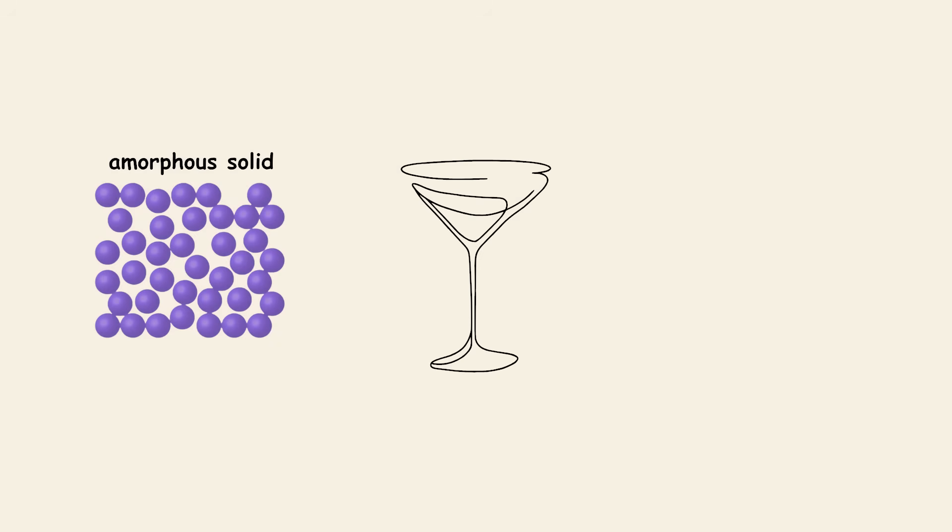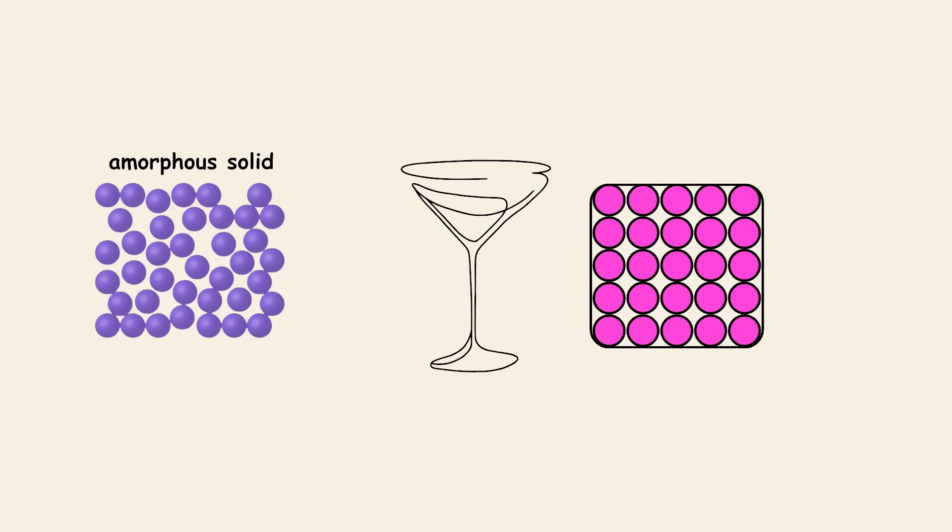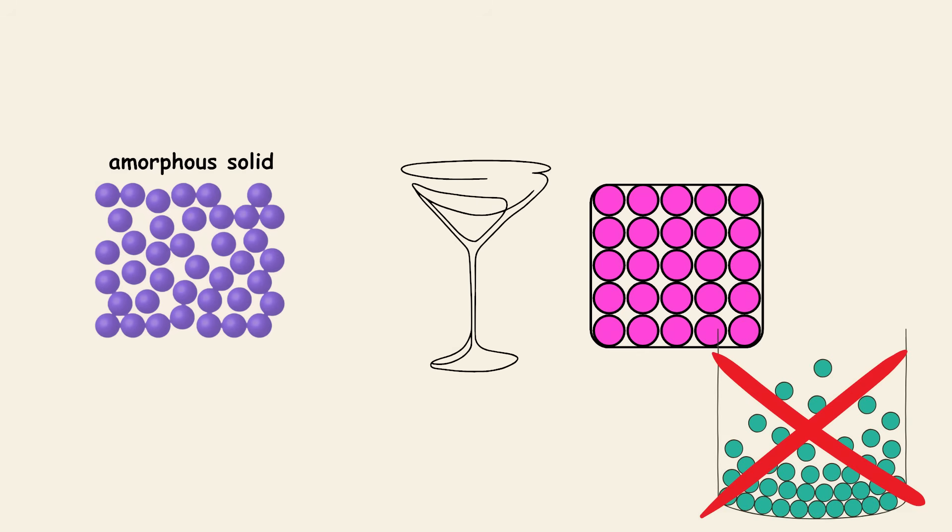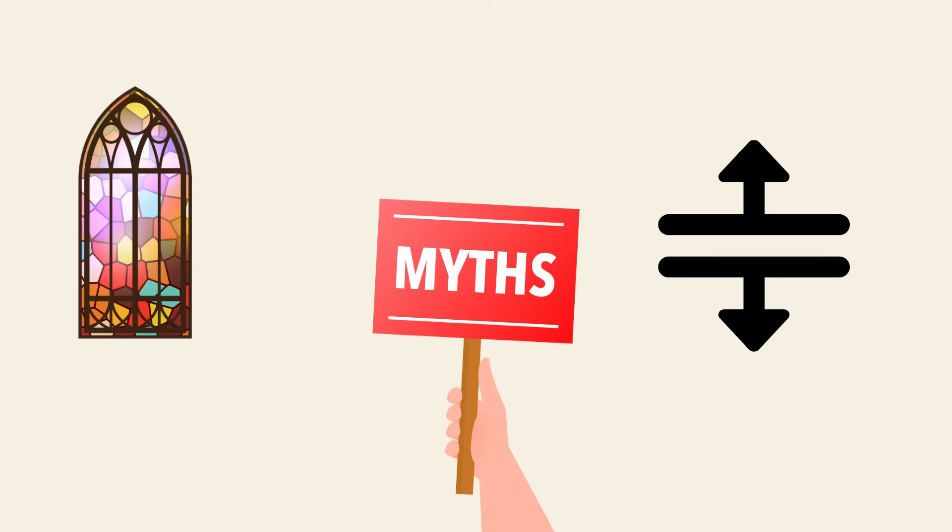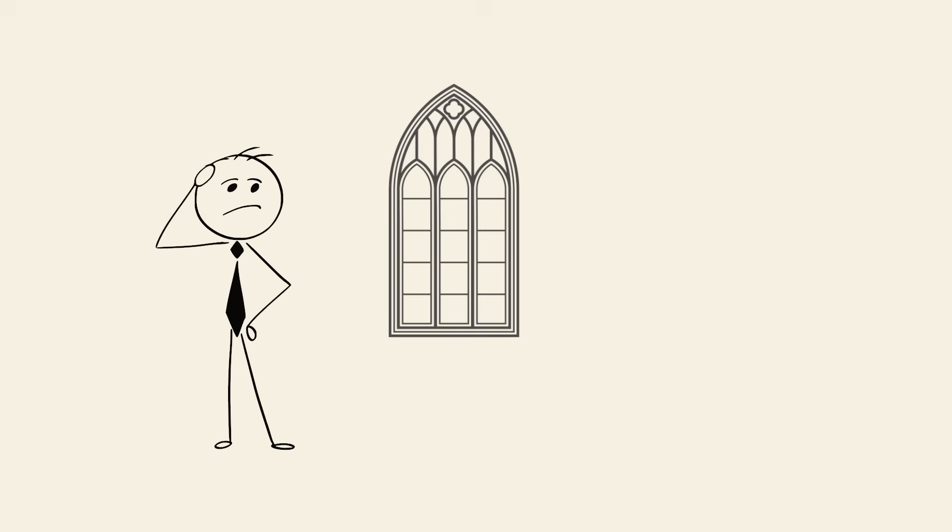Glass is actually an amorphous solid, meaning its atoms are arranged more like a liquid than a crystalline solid, but it doesn't flow over time the way a liquid would. The myth probably came from looking at old cathedral windows that appear thicker at the bottom, but that's likely due to how they were made. Not because the glass flowed downward.